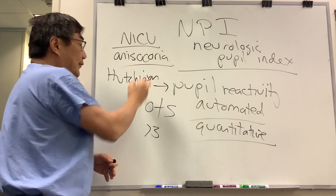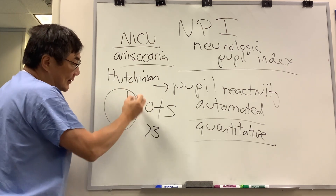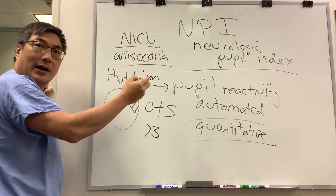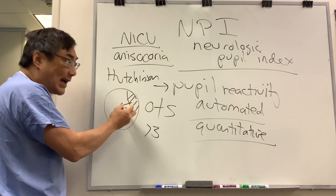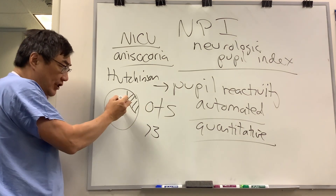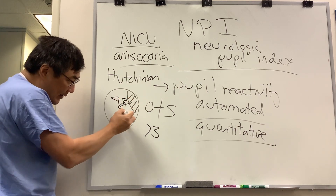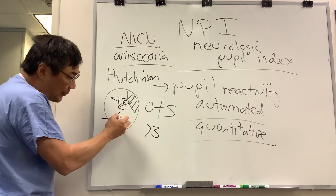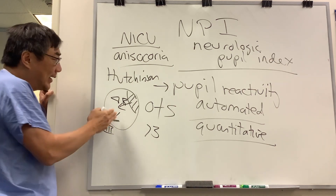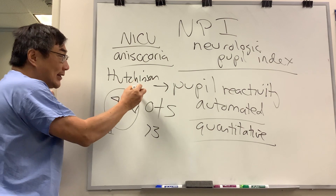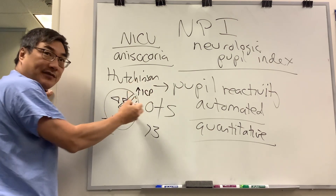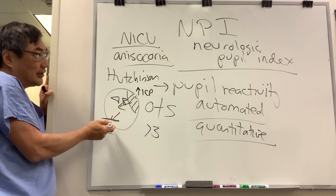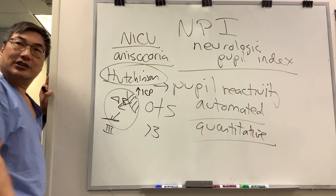If you have an intracranial process — a hemispheric lesion, edema, epidural hematoma, stroke with edema, or a blood clot — it can cause mass effect and shift. That shift can push the brain and the brainstem, and compression of cranial nerve three as it crosses the tentorium can result from increased intracranial pressure, mass effect shift, and herniation. That herniation produces an anisocoria — the Hutchinson pupil.